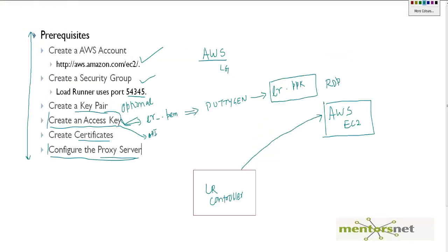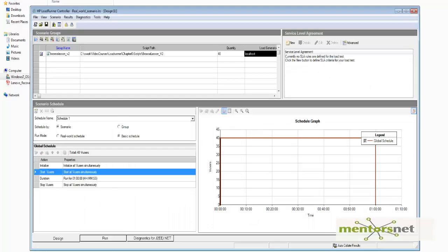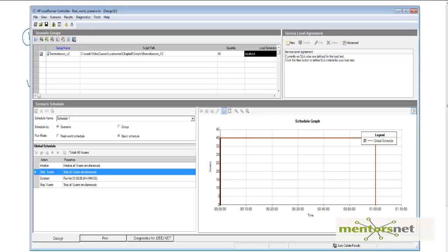Recall that as part of our prerequisite steps we already created two certificates. In the configure authentication setting step, we need to install those certificates so that we can have a secure communication between the controller and load generator. So let's go to the controller, go to Tools, and then you will see Authentication Setting.